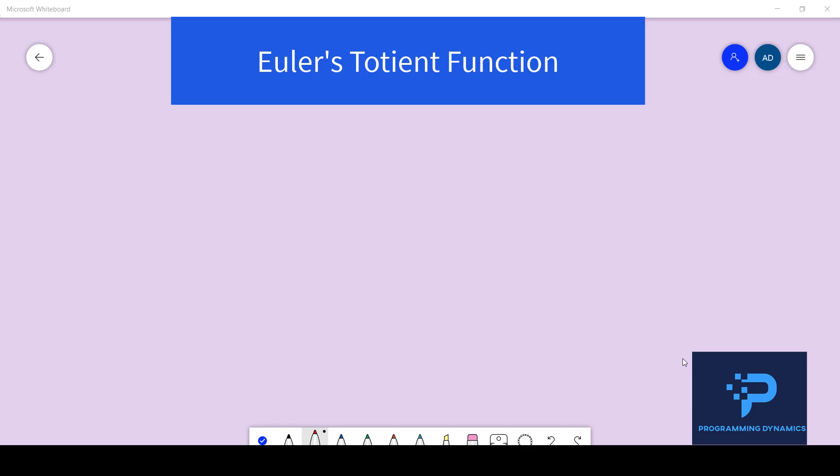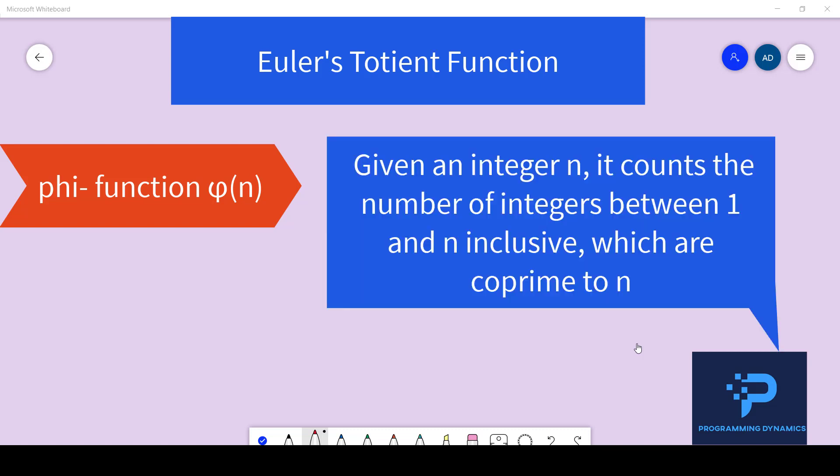Hello everyone, the topic that I am going to cover today is the Euler's Totient function. The Euler's Totient function is also known as the Phi function and what it basically does is that it counts the number of integers between 1 and n inclusive which are co-prime to n.